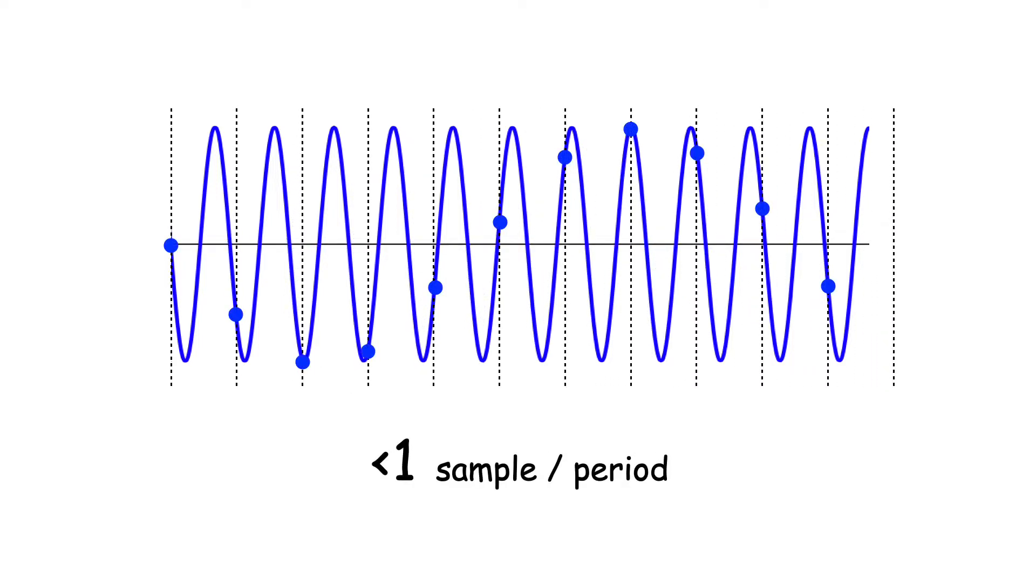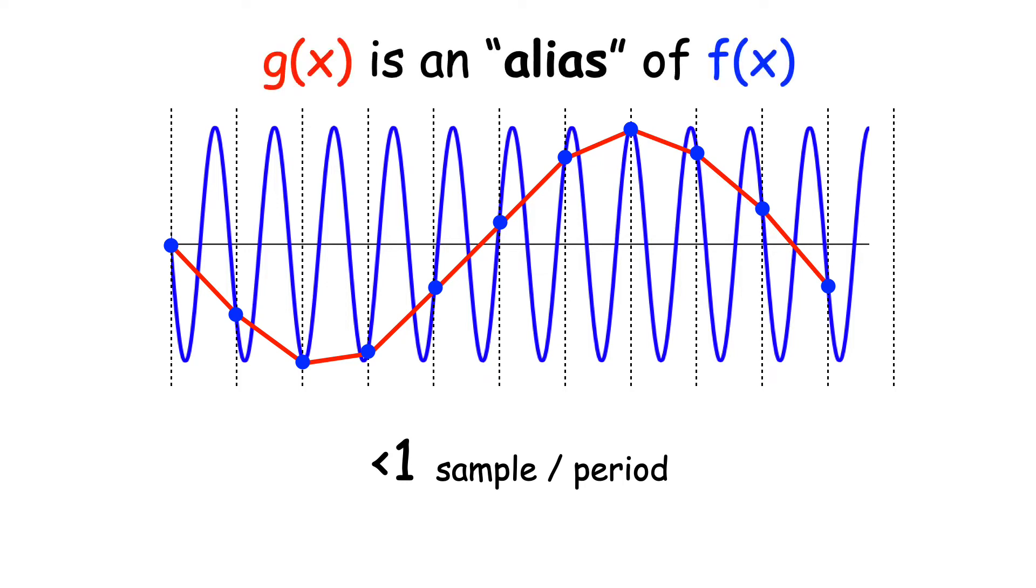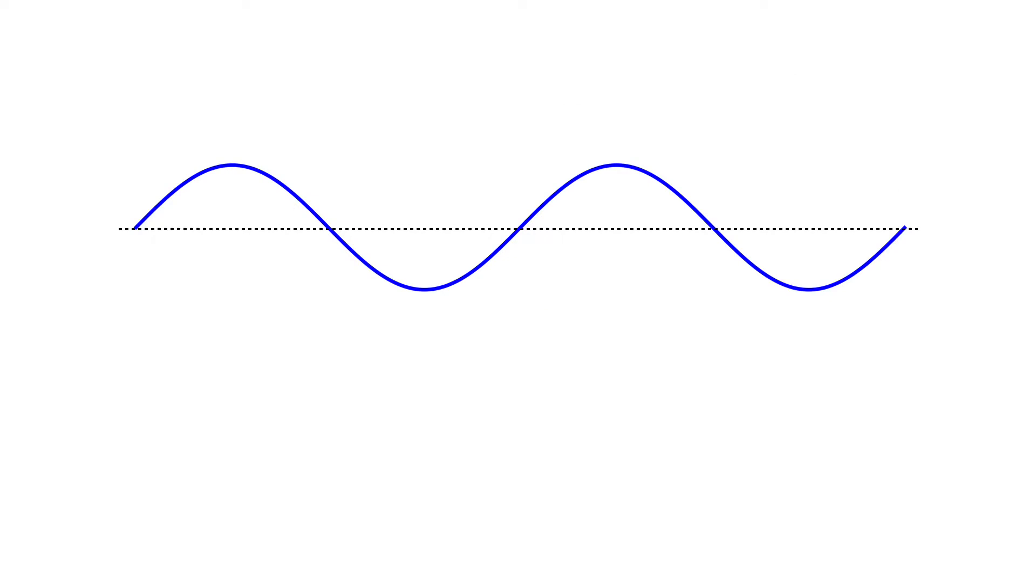And it gets even weirder. Let's see what happens if you decrease the spacing to less than one sample per period. You get a perfect reconstruction of a different sine wave. This is another alias. So how do you avoid this aliasing problem?